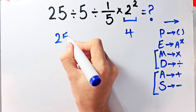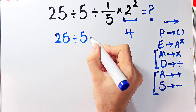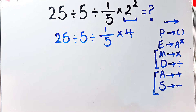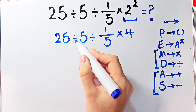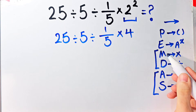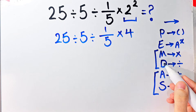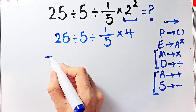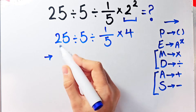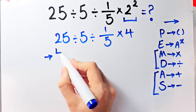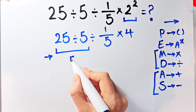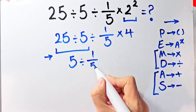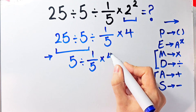Now we have 25 divided by 5 divided by 1 over 5, then times 4. Since division and multiplication have the same level of priority, we start from the left. 25 divided by 5 equals 5. Now we have 5 divided by 1 over 5, then times 4.